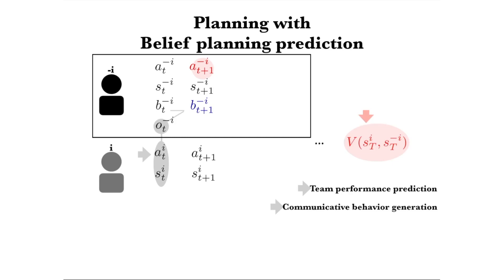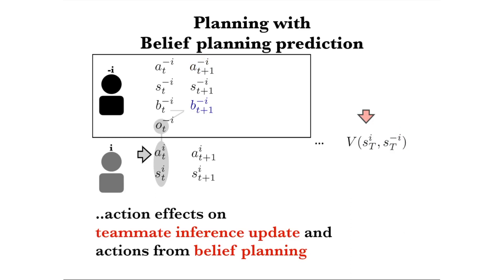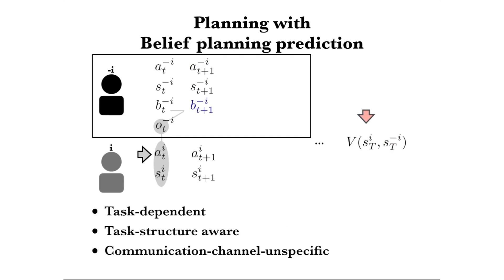Those communicative actions can be, for example, moving the partner's next item to her work table, or telling her explicitly where to put the completed assembly. With this mechanism, agent i is then solving a joint optimization problem. It searches for the action sequence maximizing team performance. During the search, it not only considers the action effects on itself but also on the partner, by updating her actions from belief planning. The approach is generic for its unspecified choice of task environment. Therefore, the solution is tailored according to task-dependent specifications and is aware of task structure in terms of the sequential effects of an action. The action space is also unspecified, which enables the approach to consider different communication channels.